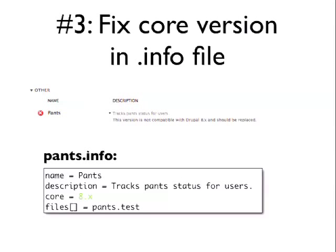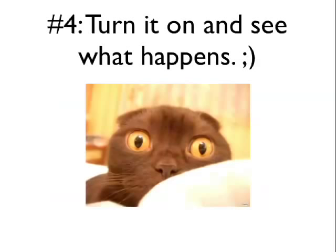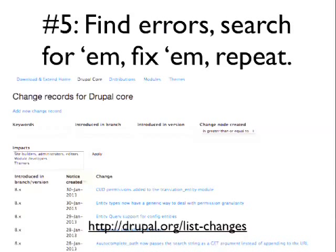Then the next thing you do is change the core version. On the info file, there's a 'core = 7.x' — you just switch that to 8.x. Until you do that, you get a little x that won't let you turn the module on. Then you turn it on and see what happens. You find your errors, search for them, and repeat over and over again until your module's working.